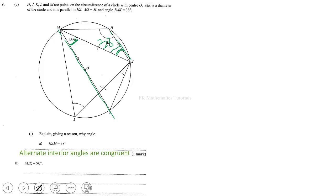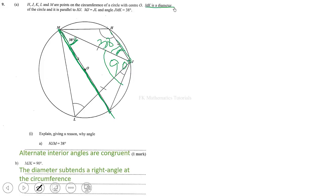Then we also have to explain the reason why angle MJK, this whole angle here, is 90 degrees. The reason is that line segment MK is a diameter — it was given in the question. Because it's a diameter, the diameter subtends a right angle at the circumference. So that's the reason why angle MJK is 90 degrees.